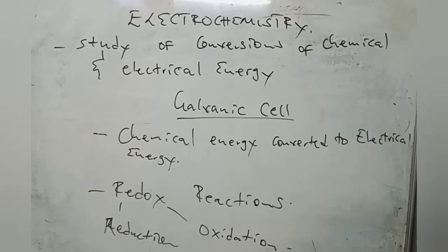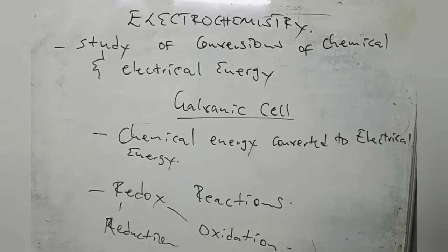A galvanic cell is a cell that converts chemical energy to electrical energy. Electrical energy is the energy due to current created. Redox reactions are what leads to the conversion of energy from chemical to electrical. A redox reaction is a reaction where you have both reduction and oxidation.